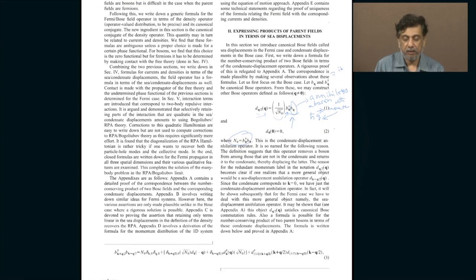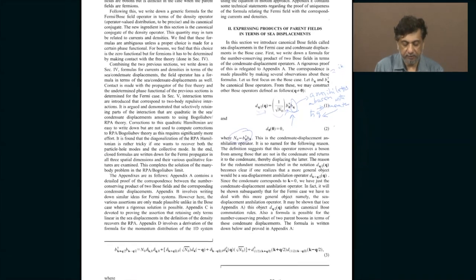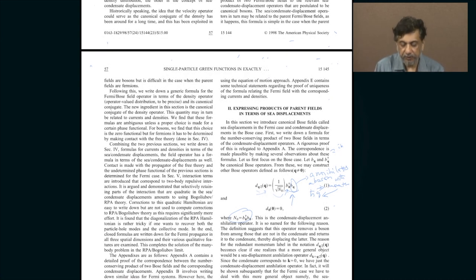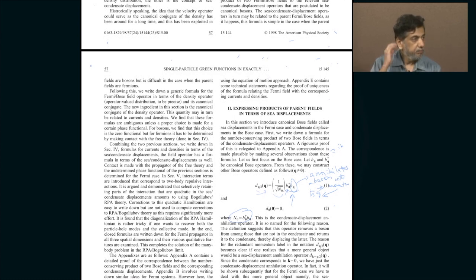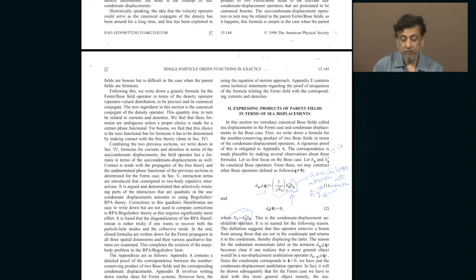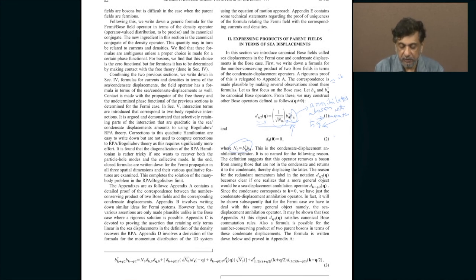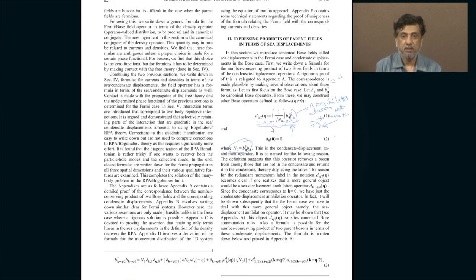Mathematically, you do not have to interpret it that way — you can just take this as a mathematical definition. The two important questions are: first, since the b's satisfy simple commutation rules as exact bosons — [b, b] = 0, [b, b†] = Kronecker delta — what about the d's? Are d's also bosons? It turns out that because of the way I defined it, the d's are also exact bosons — but only if I include this very funny non-local factor.